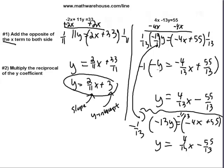So just be careful when y is negative — you have to do one of two things: either multiply by the reciprocal and then multiply by negative 1 when you end up with a negative y, or immediately multiply by the negative reciprocal when you see a negative coefficient. Let's try another problem that involves a negative y term.